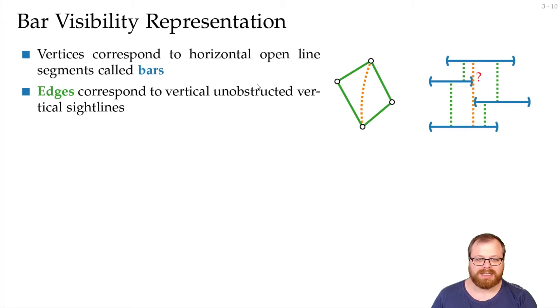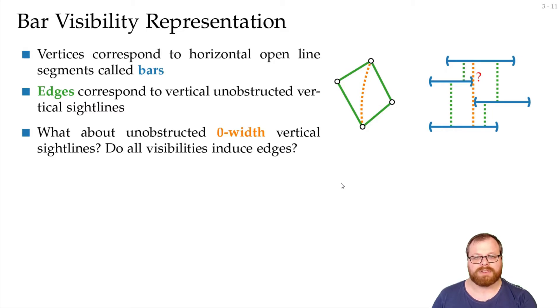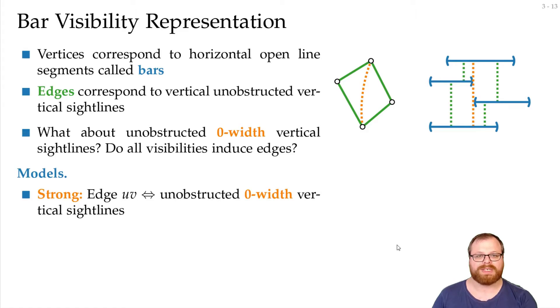Does that mean that it's unobstructed or not? There are several different models for this that answer this question in different ways. I will show you the three most important ones. In a strong bar visibility representation we have an edge if and only if we have an unobstructed zero width vertical sightline. So in that case this here would imply an edge.